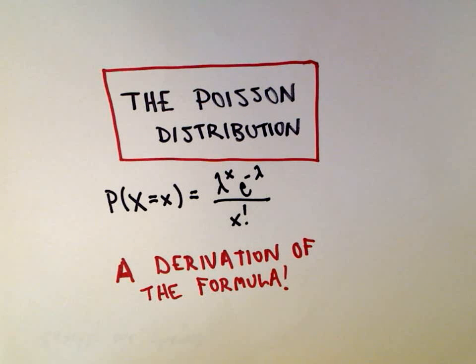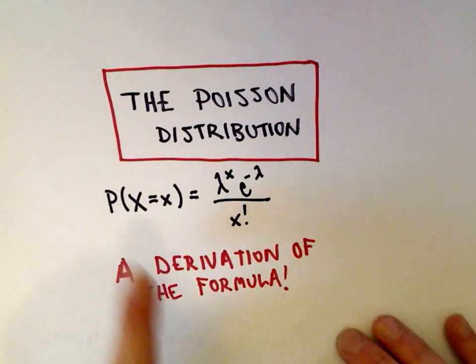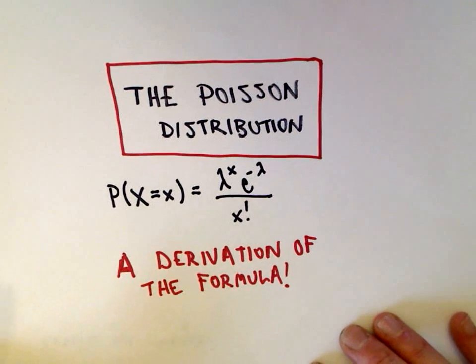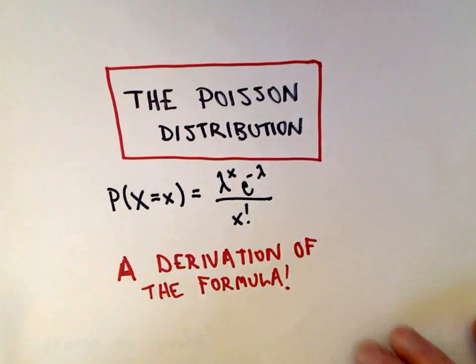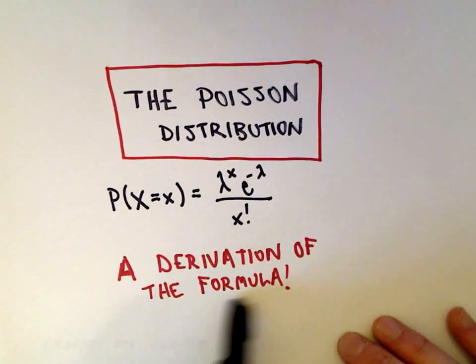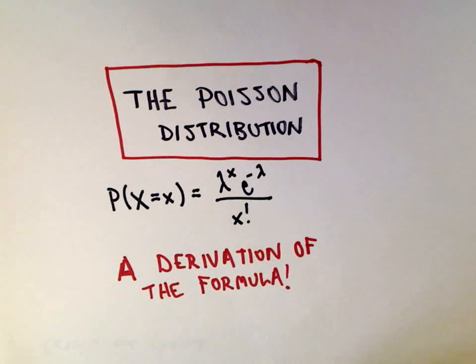In this video, I want to start talking about the Poisson distribution. What we're going to do is actually derive this formula, if you've seen it in class — so we're going to talk about a derivation. In a separate video, I'll start doing some examples of actually using this Poisson distribution.